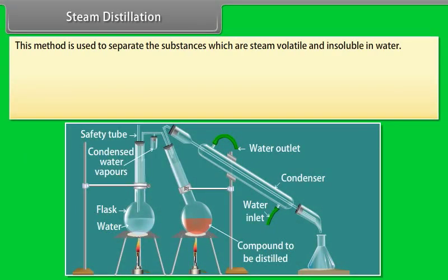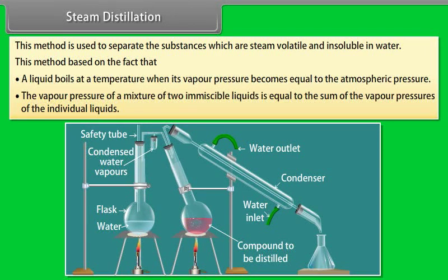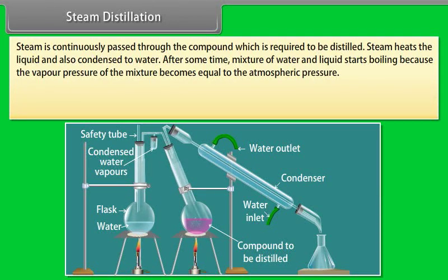Steam distillation: This method is used to separate substances which are steam volatile and insoluble in water. It is based on the fact that a liquid boils at a temperature when its vapour pressure becomes equal to the atmospheric pressure, and the vapour pressure of a mixture of two immiscible liquids is equal to the sum of the vapour pressures of the individual liquids. Steam is continuously passed through the compound to be distilled; steam heats the liquid and also condenses to water.